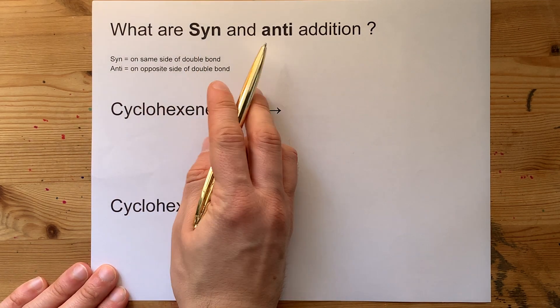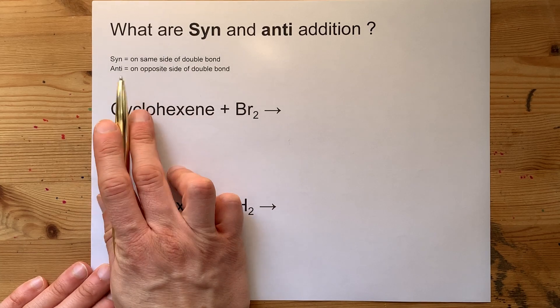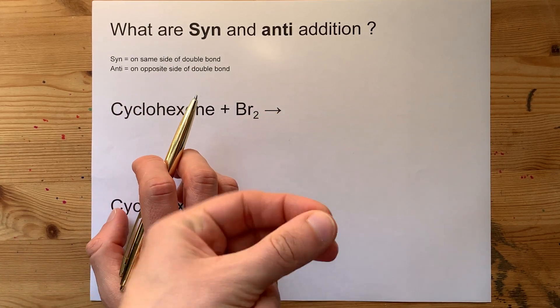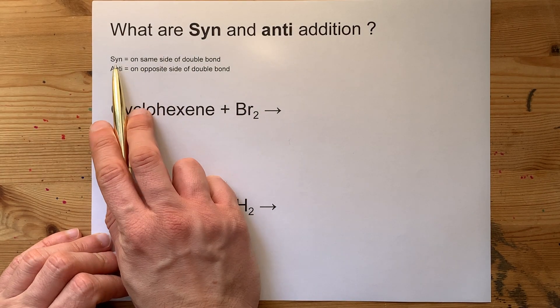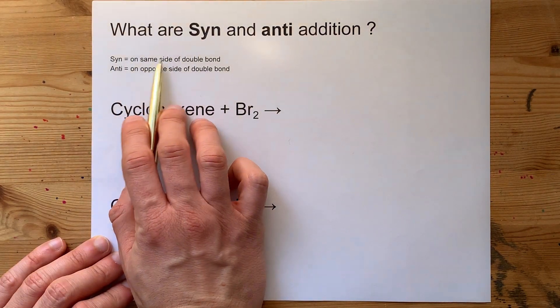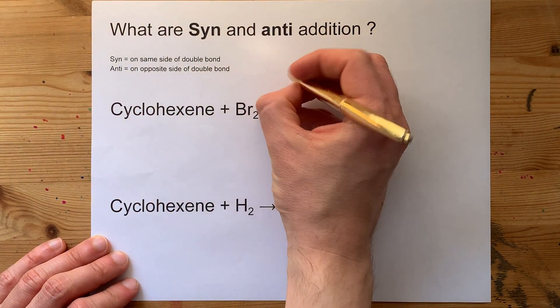What are syn and anti-addition? When you are adding two things across an alkene or alkyne, syn means that you're adding both of those two things on the same side of the double bond.